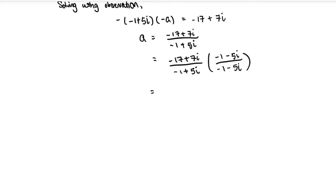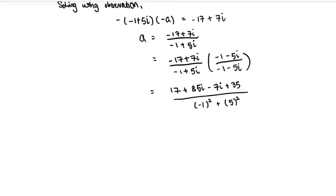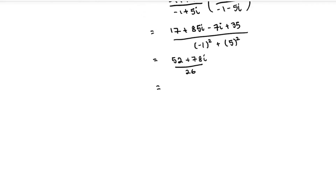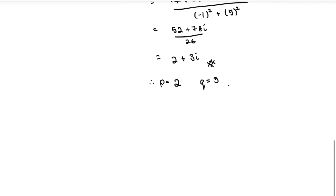Multiplying out: numerator gives 17 + 85i − 7i + 35 = 52 + 78i. Denominator: (−1)² + (5)² = 1 + 25 = 26 (using difference of squares with i² = −1). So a = (52 + 78i) / 26 = 2 + 3i. Therefore p = 2 and q = 3.